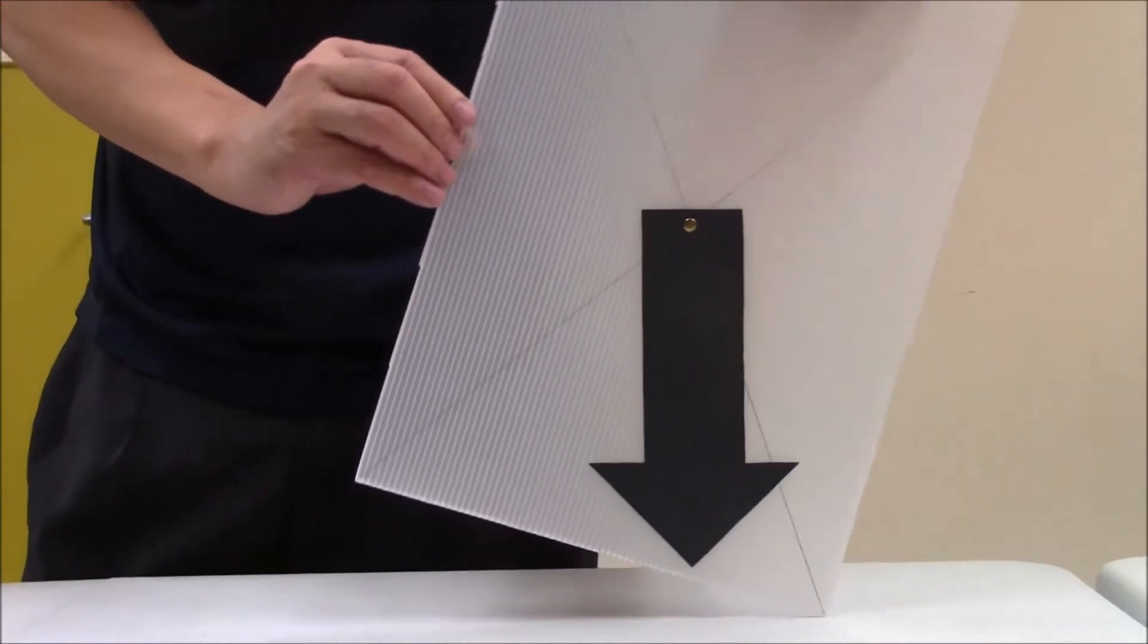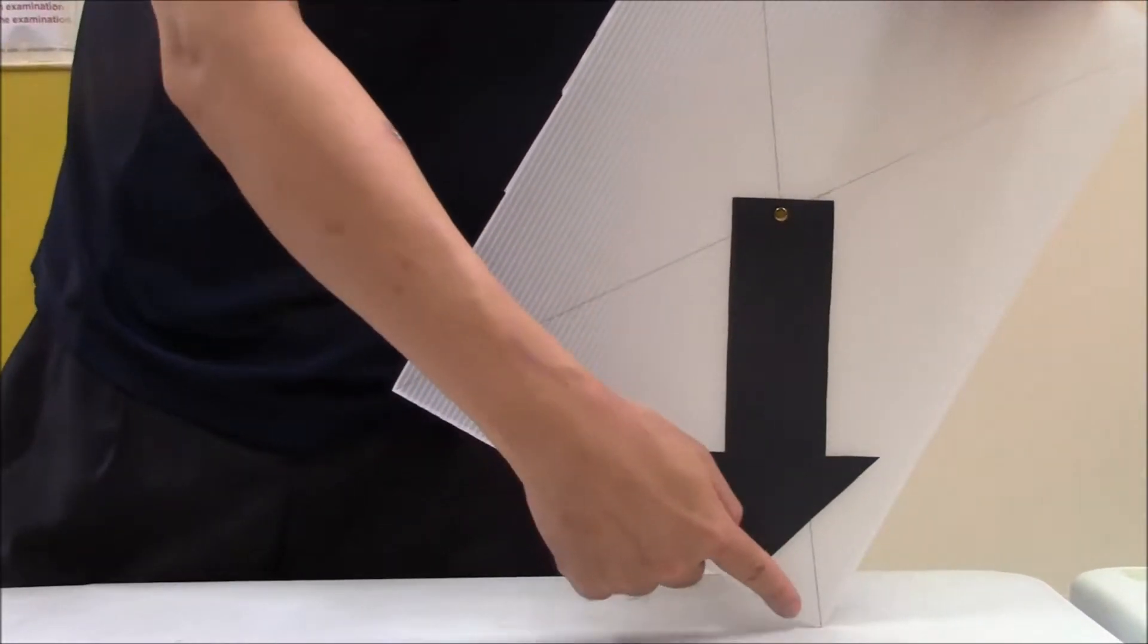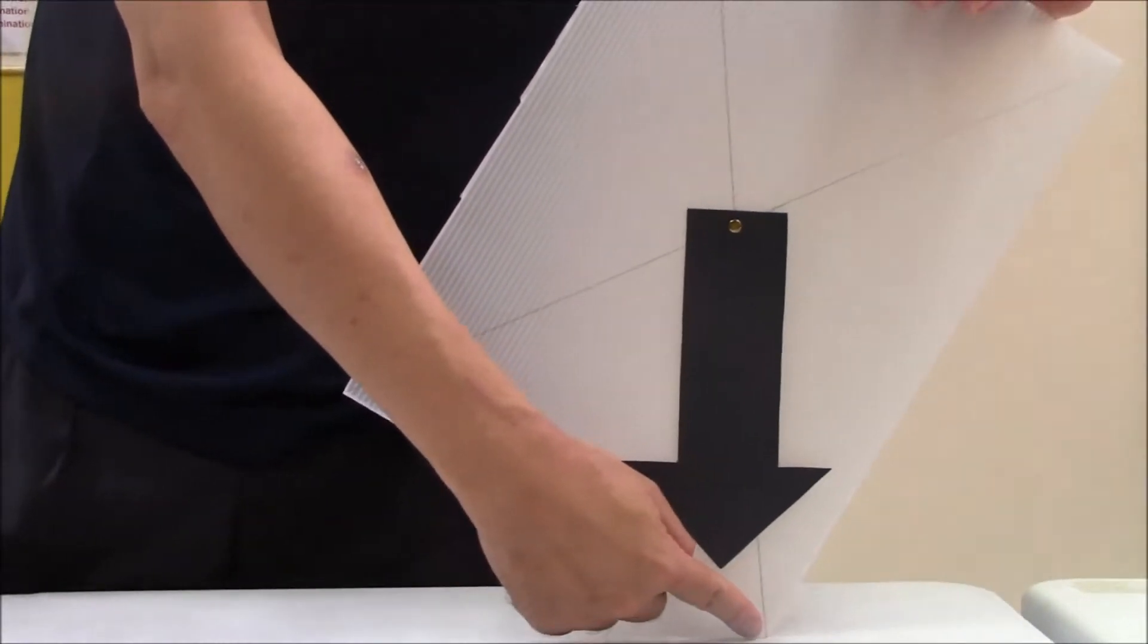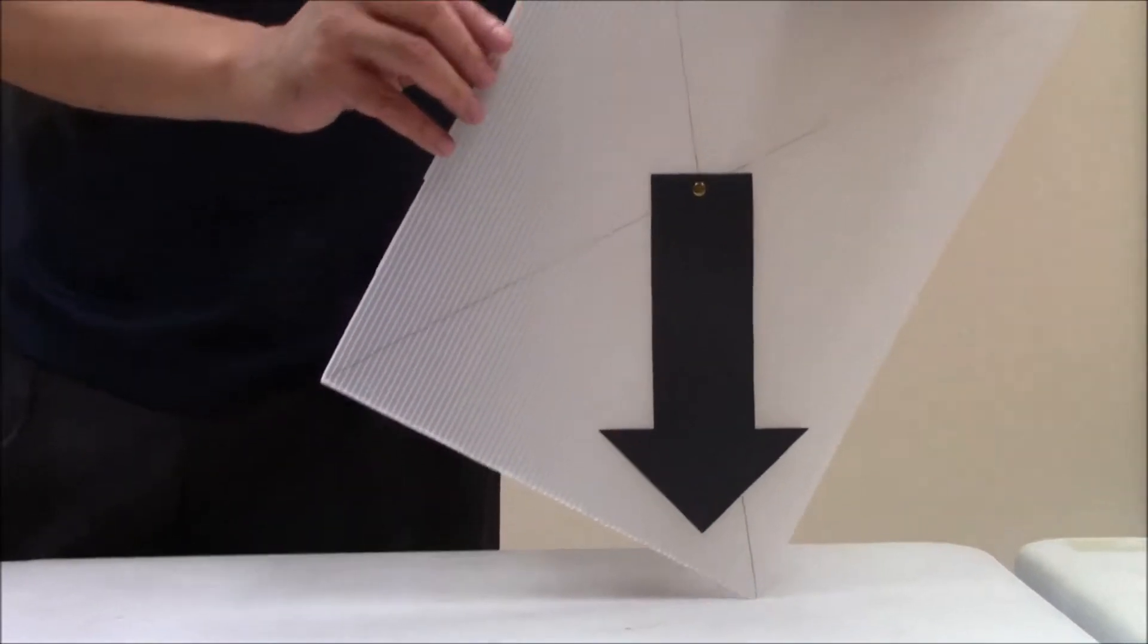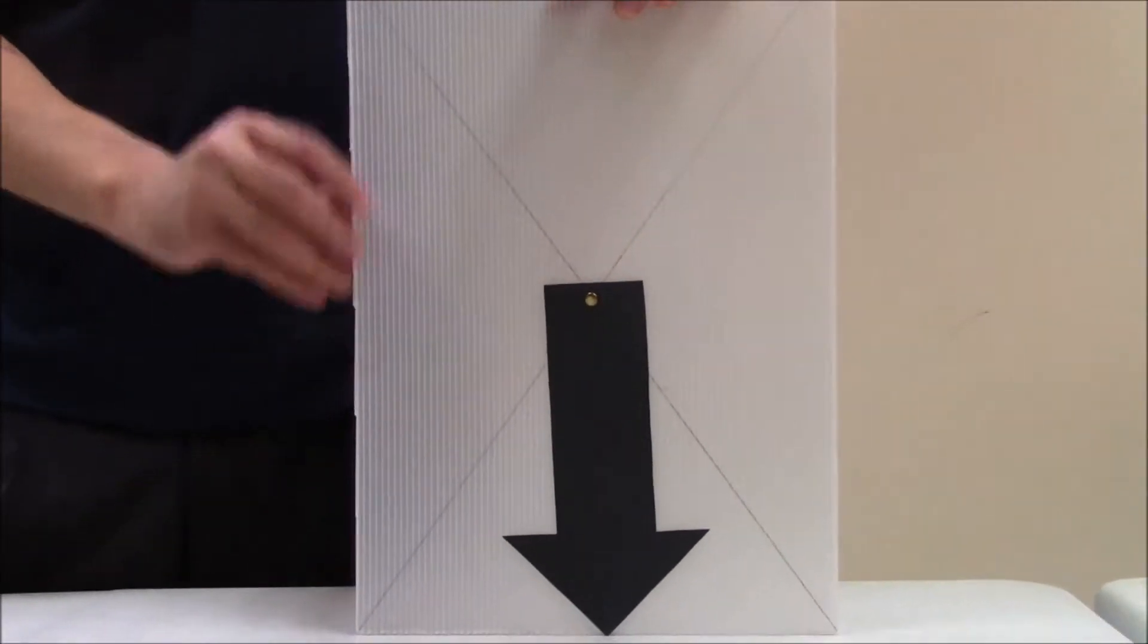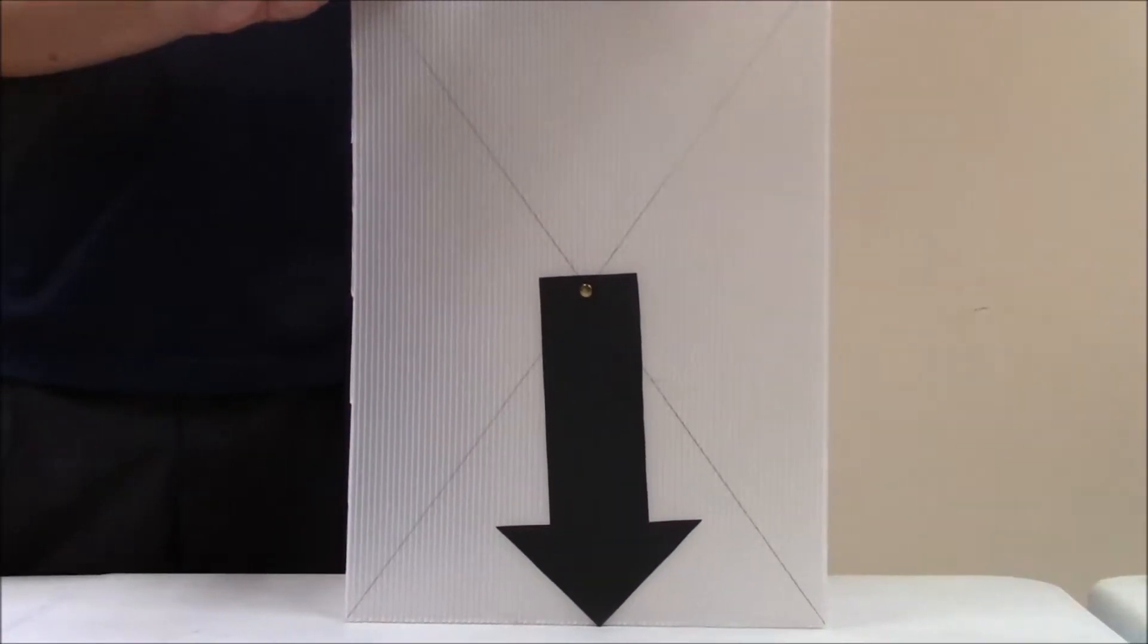When we tilt the cardboard to the right, the point of contact between the box and the floor is the pivot. We have mentioned all the relevant terms for this demonstration. We are now ready to begin.